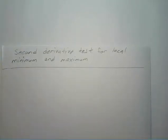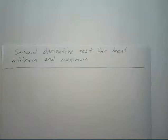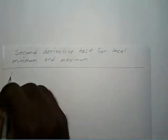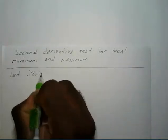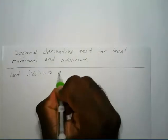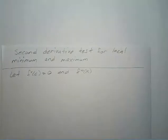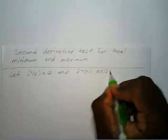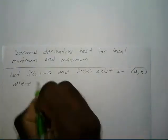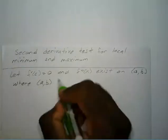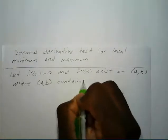Hello everyone. In this video we will be looking at using the second derivative test to find the local minimum and maximum points of a graph or function. Before we start, we have to make sure that our function f prime of c equals zero, and your second derivative actually exists on the interval from a to b, where that interval from a to b actually contains the value c.